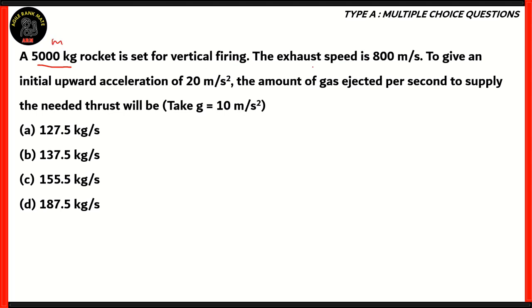It's set for vertical firing. Exhaust speed is 800 m/s, and that's relative velocity. The initial upward acceleration that's required is 20 m/s². So the acceleration is 20 m/s², and the value of g is given as 10 m/s².